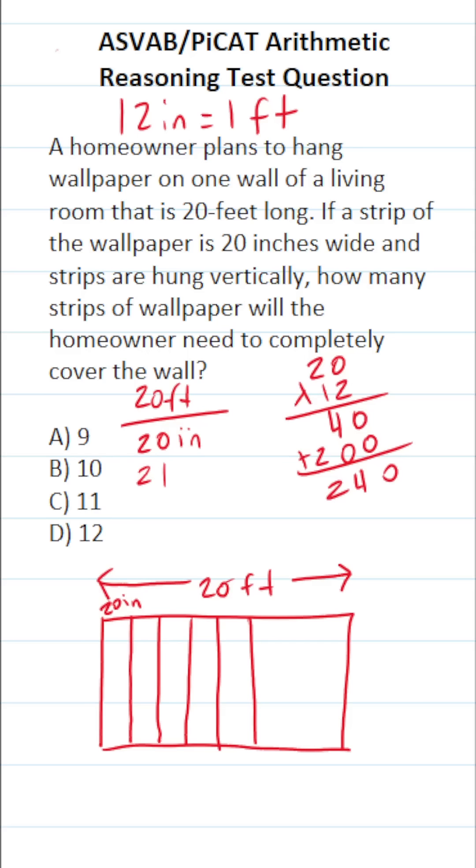So this becomes 240 inches, which is the same thing as 20 feet, divided by 20 inches. Now this math is pretty easy to do. Cross out our corresponding units, cross out these two corresponding zeros. 24 divided by 2 is 12. In other words, this homeowner is going to have to hang 12 strips of wallpaper to completely cover this wall.